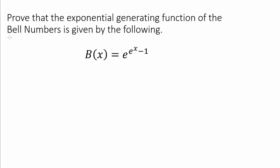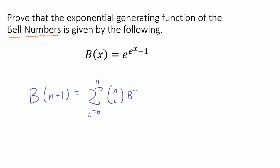In the last video, I introduced you to the Bell numbers, and we proved that b(n+1) is given by the recurrence relation: sum from i equals 0 to n of n-choose-i times b(i). Using this recurrence relation, today we are going to prove that the exponential generating function of the Bell numbers is the gorgeous formula e to the e to the x minus 1.